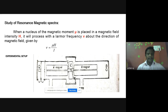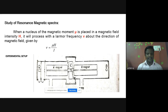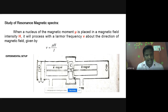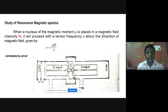Now we use the magnetic resonance spectra method. Using the study of magnetic resonance spectra, we can find the magnetic moment of different nuclei. The experiment is based on the principle that when a nucleus of magnetic momentum mu is placed in a magnetic field of intensity H, it will precess with the Larmor frequency about the direction of the magnetic field. This process is explained with the application: mu equals mu times H divided by I.